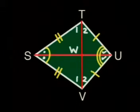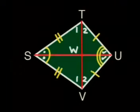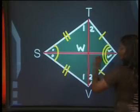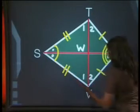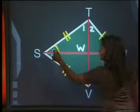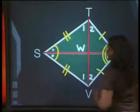Let's use what we know about congruent triangles. Let's look at triangle STW and triangle SVW. We know that SV is equally linked to ST. We know that this angle at S is equal to this angle at S.